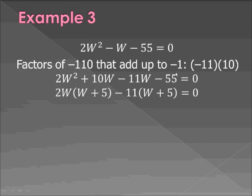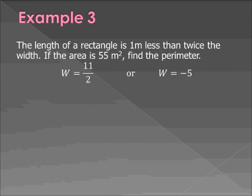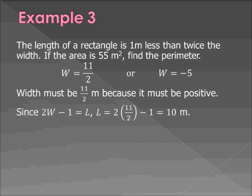So you get 2W times W plus 5 minus 11 times W plus 5. So again, if you don't want to do this step, you want to do the box, you want to do the railroad, you want to do the cross, you have another method that works, use that. I'm only doing it here because it saves space. So you end up getting 2W minus 11 times W plus 5 equals 0. So W is going to equal either 11 halves or negative 5. Now, you can't have a negative 5 width. Width has to be positive. So the width in this case has to be 11 halves meters. So now you've figured out the width. You need to go back and solve for the length. The length is 2W minus 1. So you plug in the 11 halves for W. 2 times 11 halves minus 1. And you get that the length is 10 meters.